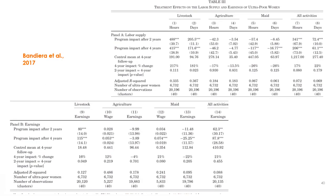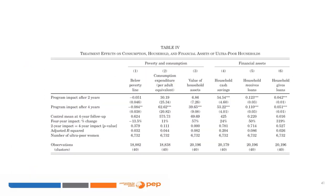A table from the Bandiera et al. paper illustrates treatment effects on labor supply and earnings of ultra-poor women, showing that labor supply in terms of hours and days increased with the program as well as earnings, but mostly due to a reduction in days and hours worked as a maid and an increase in time devoted to agriculture. After four years, the program reduced participants' share in poverty, increased consumption, the value of assets, savings, and whether households received or gave loans.